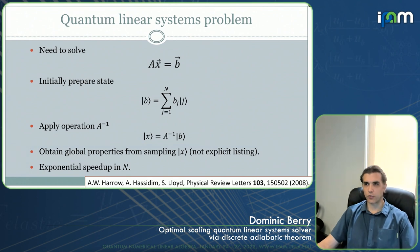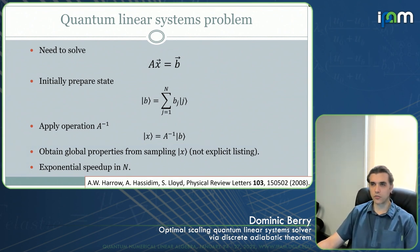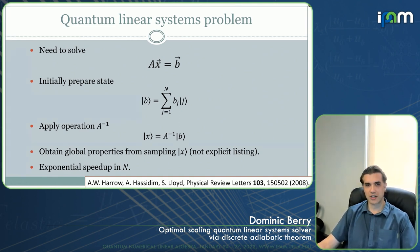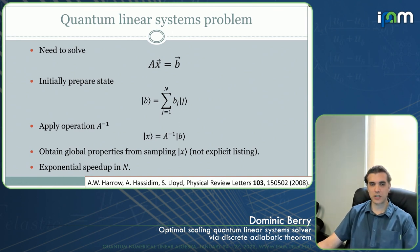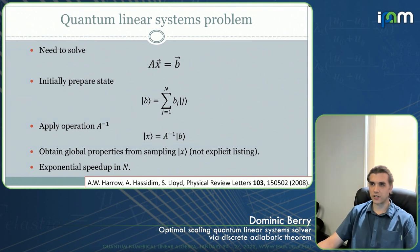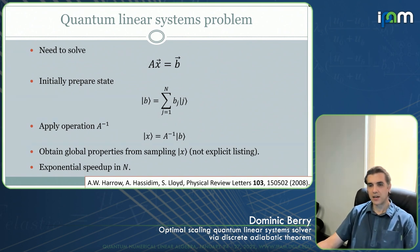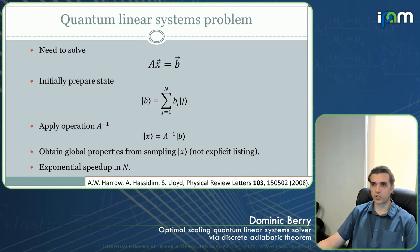For the general formulation of quantum linear systems, we aim to solve for X, a vector in some very large dimension N, given a vector B and a matrix A, which might be a sparse matrix. Typically what is assumed is that you're given an initial state B where the amplitudes encode the components of that vector, and you aim to produce the corresponding state for the solution X. The final state X is essentially like applying A to the minus 1 as an operation on that initial state B. Because this doesn't give an explicit listing of the components of X, you typically need to obtain global properties of the solution from sampling that state.